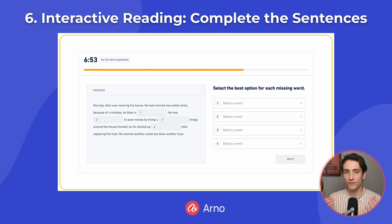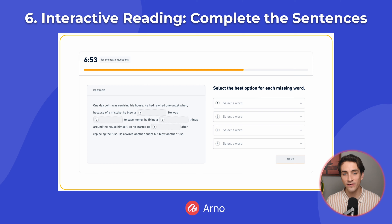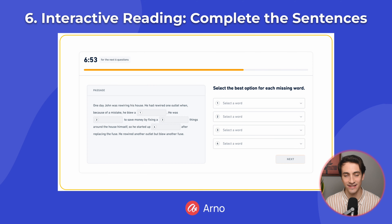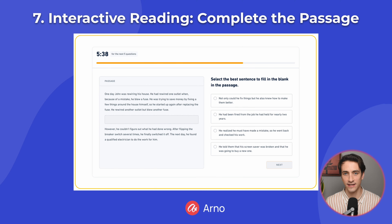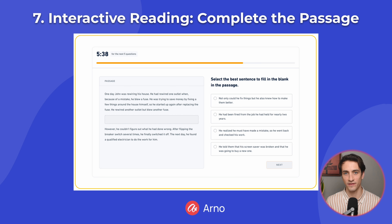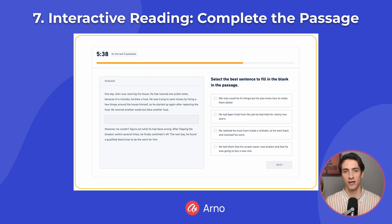The Interactive Reading section gives you a passage to work with. The first step is you need to fill in the words that are missing from the passage. This is the Complete the Sentences question type. After you complete the sentences, you will be given another portion of the text, but a part in the middle will be missing. And in the Complete the Passage question type, you will have to fill in the missing sentence.